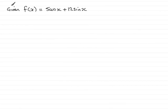In this question we're given that f(x) equals 5 cos x plus 12 sin x and asked to write f(x) in the form r cos(x - α) where r is a constant and α is an angle in radians between 0 and π/2.